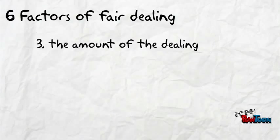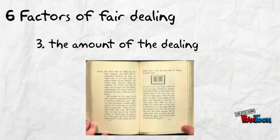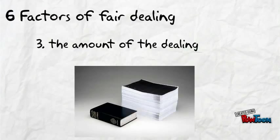Number three: the amount of the dealing. How much of the work is being copied? Consider the quantity and quality of the work being copied. Remember, the less being copied is better. An excerpt of a short story or a chapter of a book being copied would be fair, whereas copying an entire book of short stories would be considered unfair.